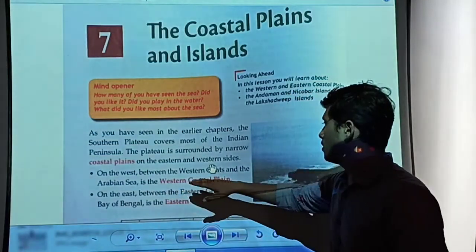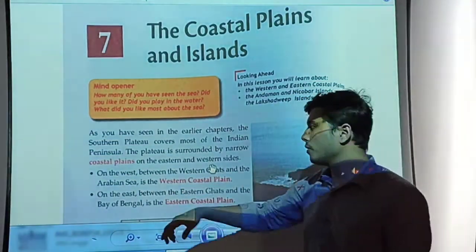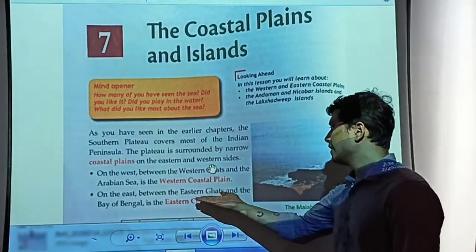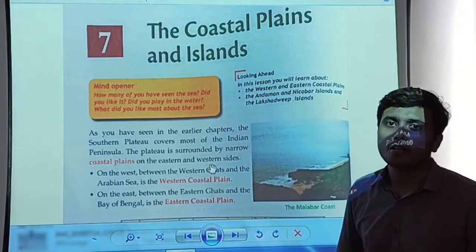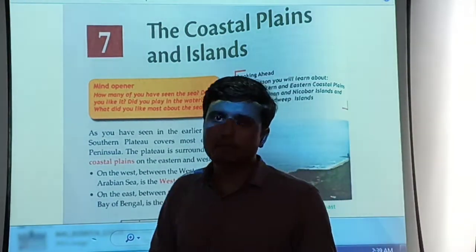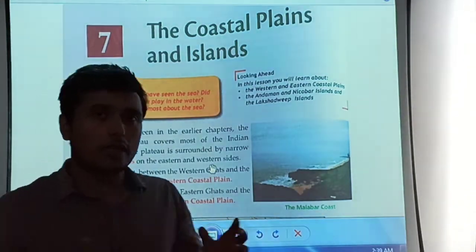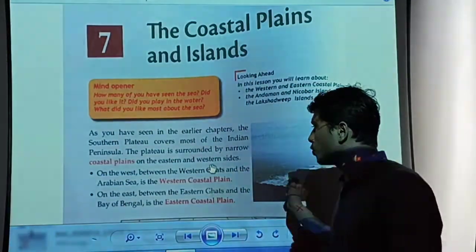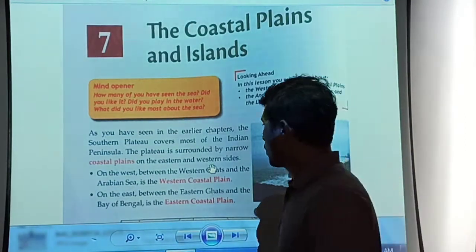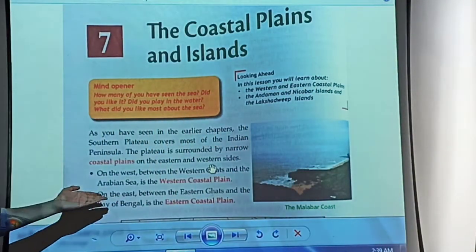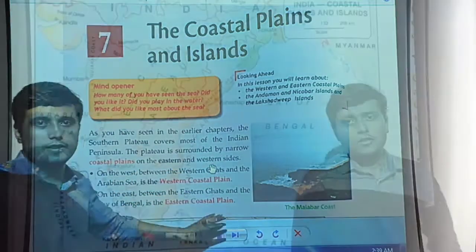On the west, between the Western Ghats and the Arabian Sea, is the western coastal plain. On the east side, between the Eastern Ghats and the Bay of Bengal, are the eastern coastal plains. With the help of the map of India and its peninsular region, we can understand the location and other features present there, including where the seas and different islands are located.